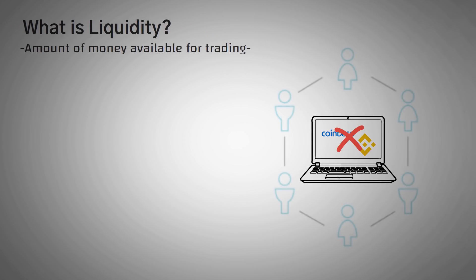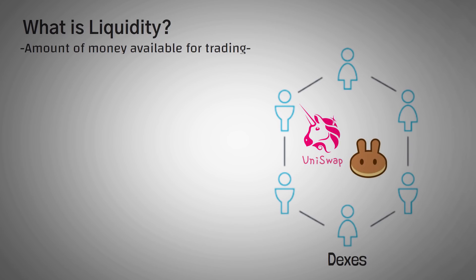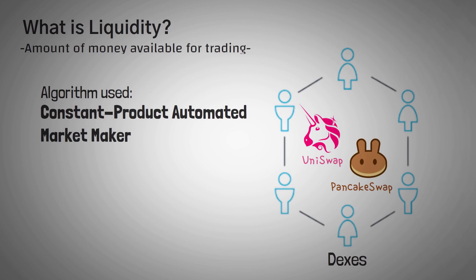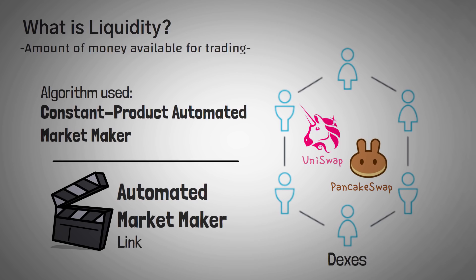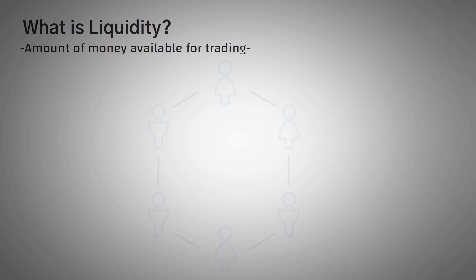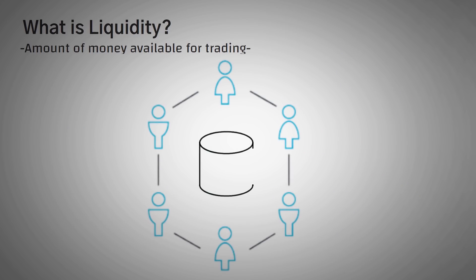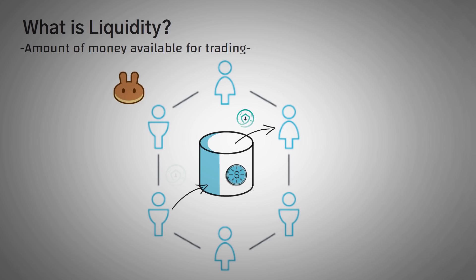These applications use a specific algorithm called a constant product automated market maker. Check the links in the description if you want more on that. These DEXs only have liquidity if people give it to them — you can only go to PancakeSwap and actually buy SafeMoon if someone else has come along and actually given PancakeSwap their SafeMoon for you to trade with.